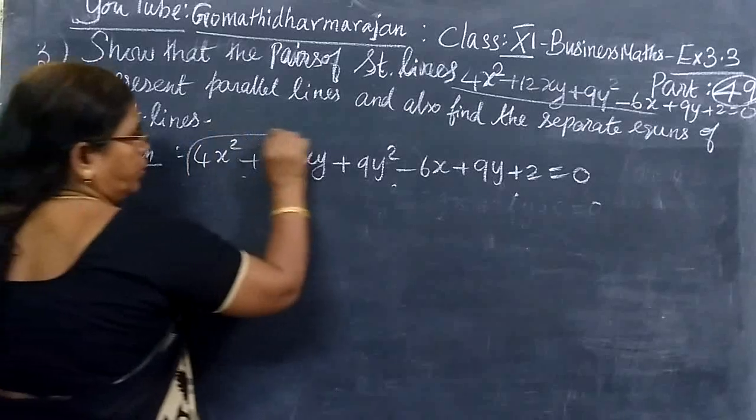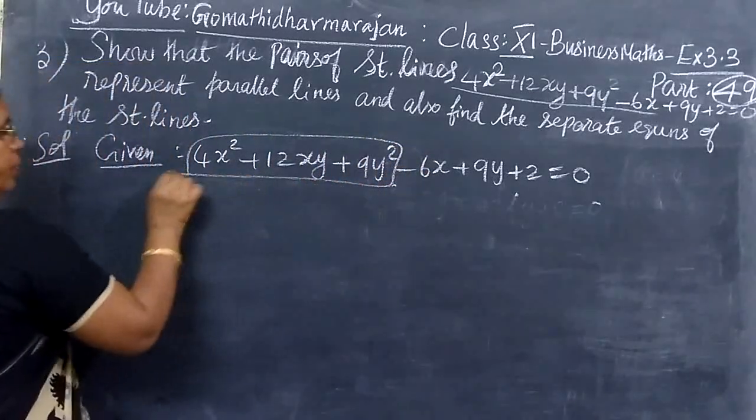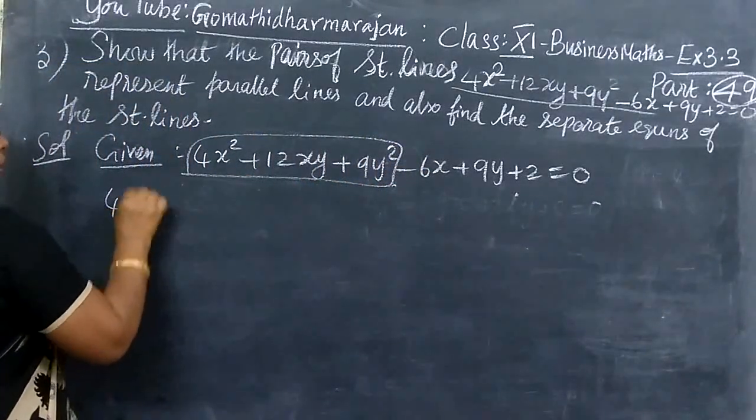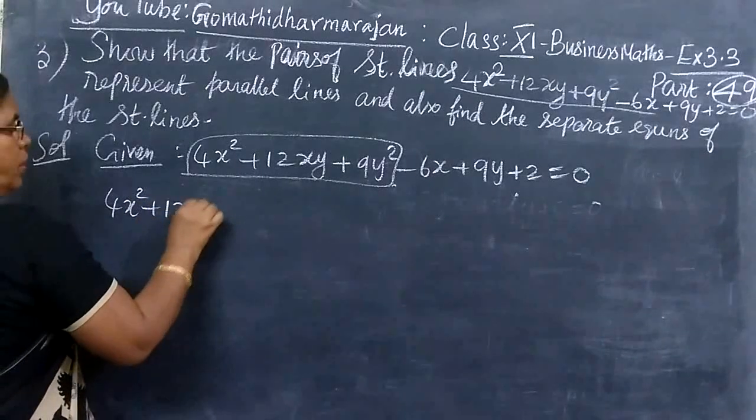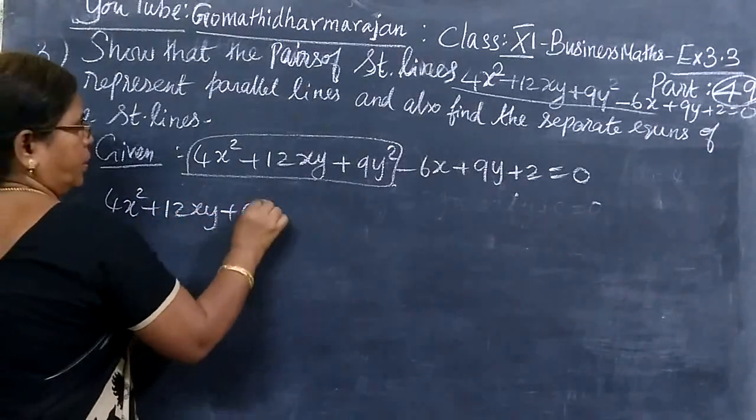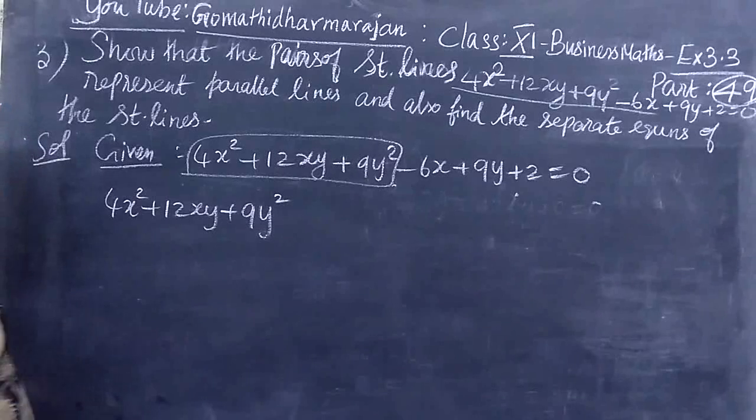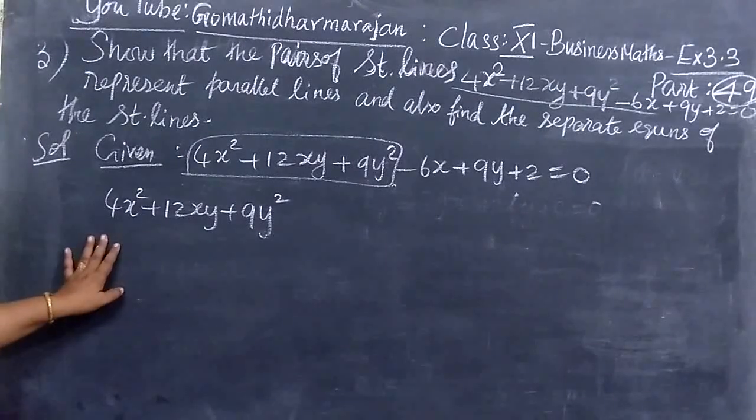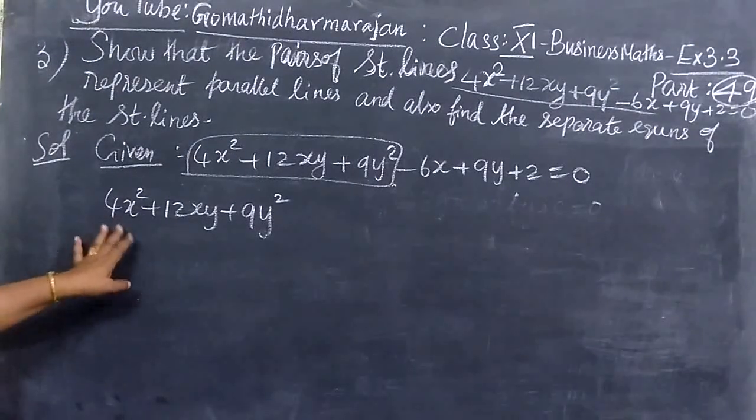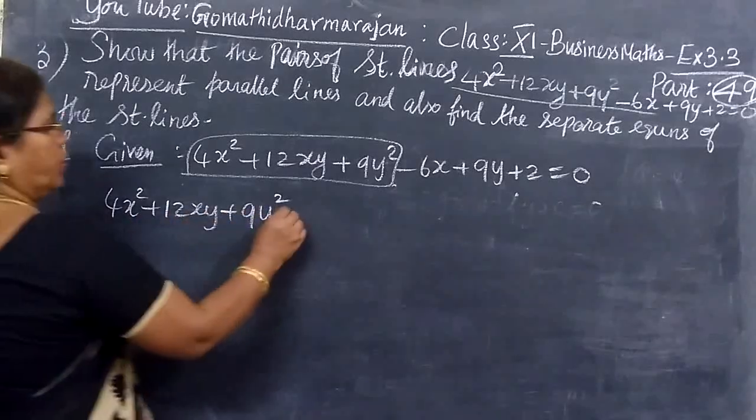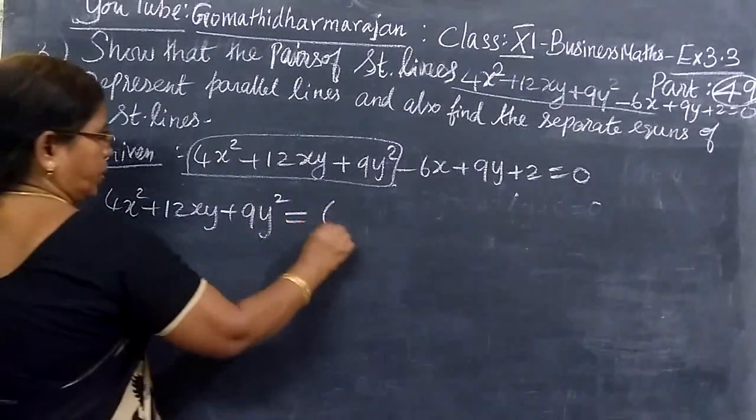Now we are given: 4x² + 12xy + 9y² - 6x - 9y + 2 = 0. This is the pair of straight lines. This can be written in the form (2x + 3y)².